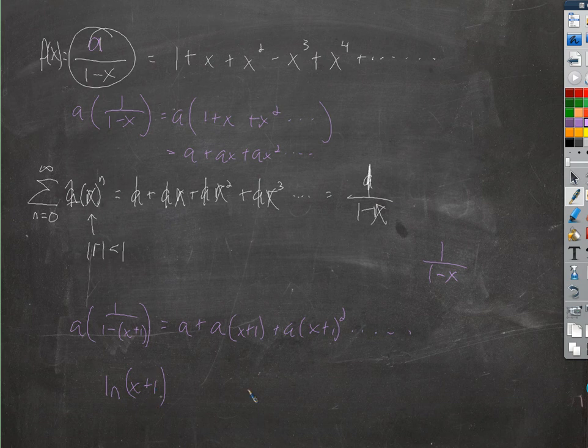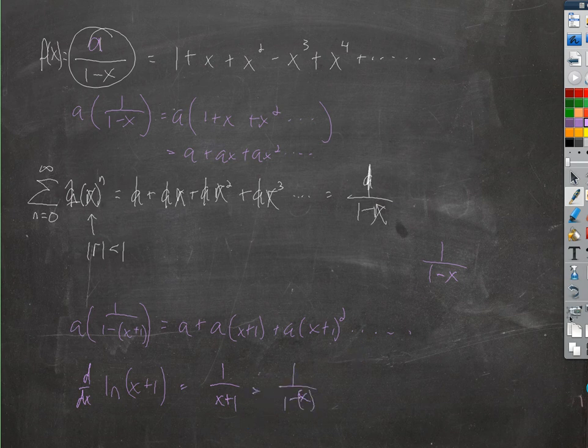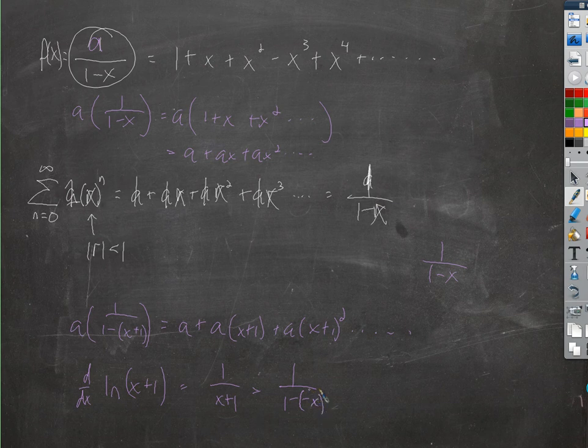So this doesn't look like that, but you know what does? Its derivative looks kind of like this. If I took the derivative of this, it would be equal to 1 over x plus 1, which looks kind of like that if I write it like this, 1 over 1 minus negative x. Let me rewrite that so that looks good: 1 minus negative x.